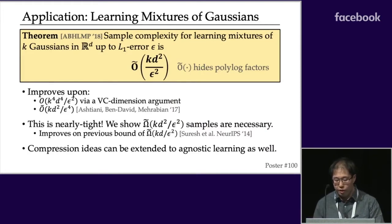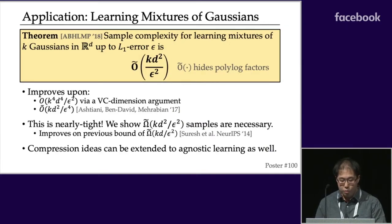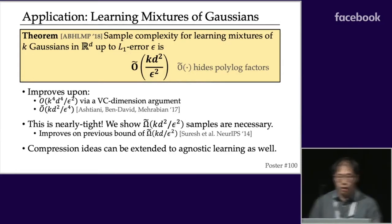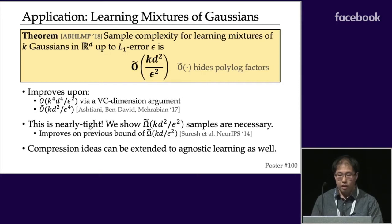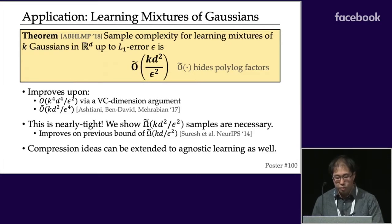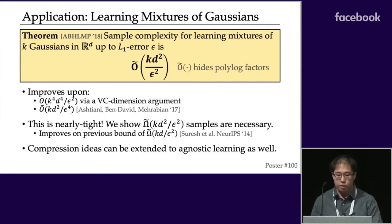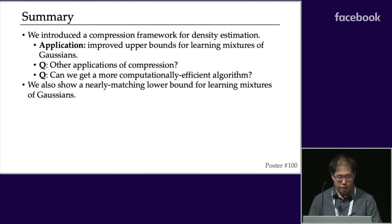A D² compression scheme immediately extends to an algorithm for learning mixtures of K Gaussians using only KD² / ε² samples, up to polylog factors. This improves upon prior results, including a VC dimension argument and the earlier work by my co-authors. This bound is nearly tight: we also show a KD² / ε² lower bound using ideas from information theory and high-dimensional probability. These compression ideas also extend to the agnostic setting, so there is no need to assume the actual distribution is a mixture of Gaussians.